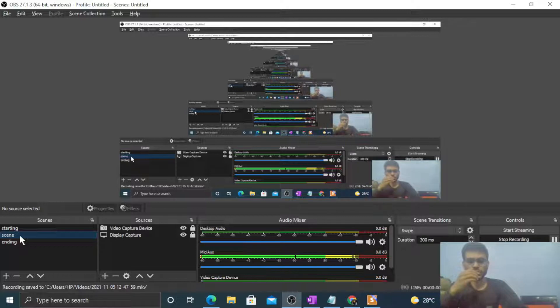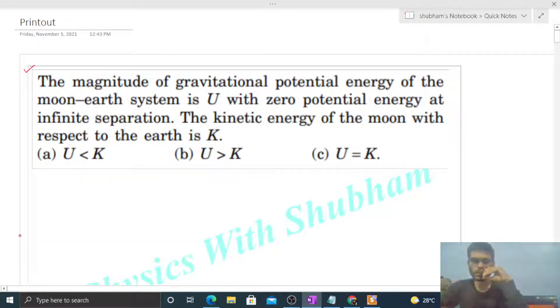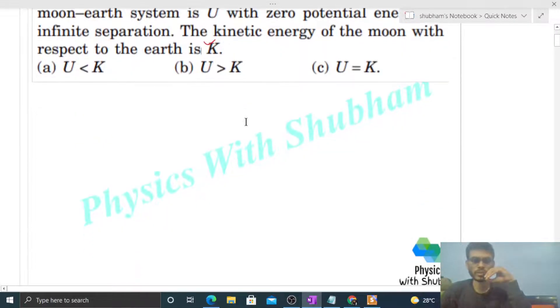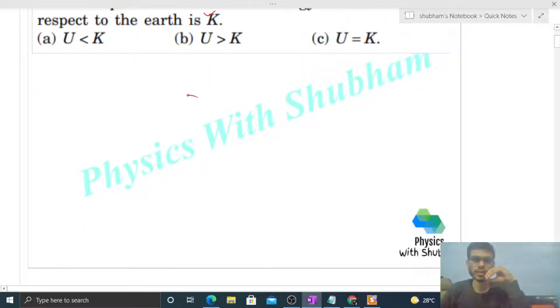Hi everyone, today let's discuss this interesting problem. It says the magnitude of gravitational potential energy of the moon-earth system is U with zero potential energy at infinite separation. The kinetic energy of the moon with respect to the earth is K. You have to compare U and K.